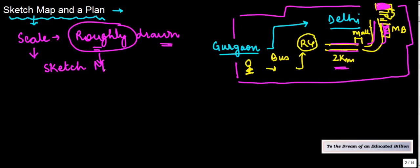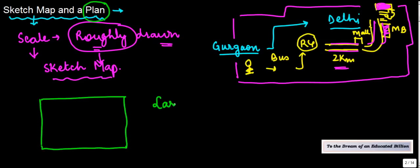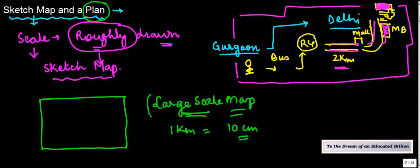Now coming to the next one, which is a plan. What exactly is a plan? Many times you may be given some data on a large-scale map. A large-scale map is something in which a small area is represented in the map with a big scale. So let's say one kilometer is shown as 10 centimeters, which normally is not the case otherwise. But even when you have a large-scale map, you may not be having certain specific information.